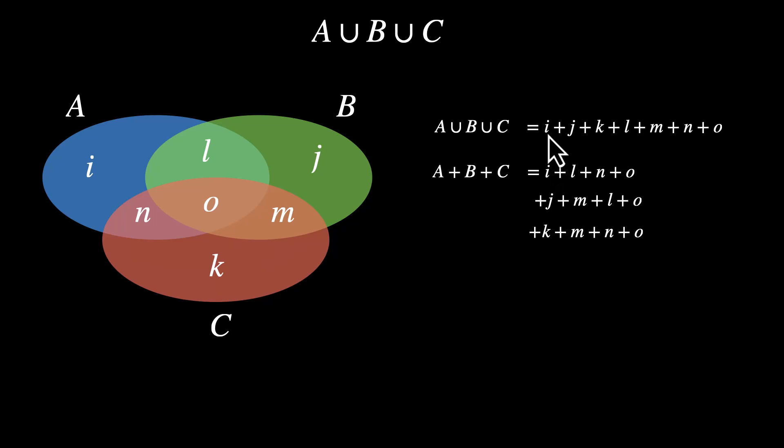So we have I, J, and K. That's what we need. Then we have L, M, N. That's also what we need. And then we have O. But L, M, and N are appearing twice. We have two L's, two M's, and two N's. In fact, O is appearing thrice. We have three O's. So we'll have to subtract things from A plus B plus C.